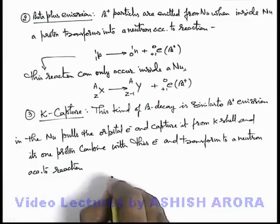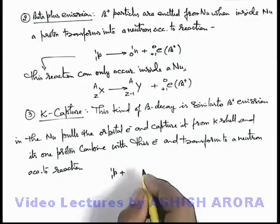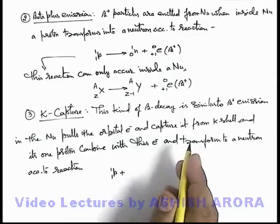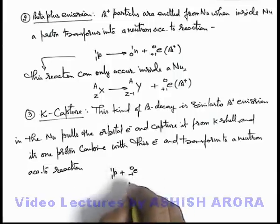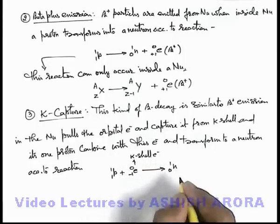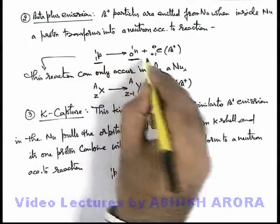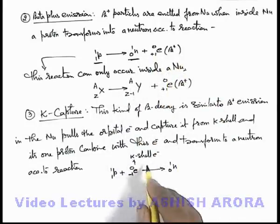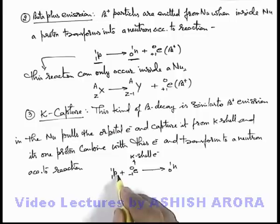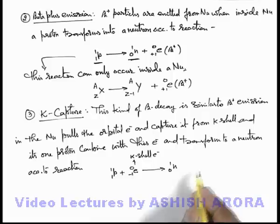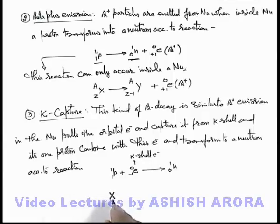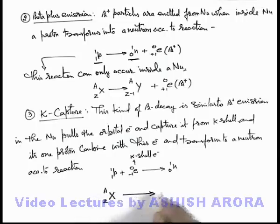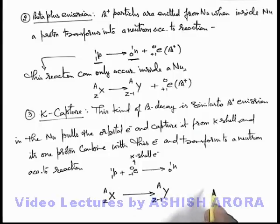This reaction better explains the phenomena: inside the nucleus, if we have a proton, it captures one electron from the K shell, which is very close to the nucleus — this occurs in the case of heavy elements. The proton combines with the K shell electron and transforms into a neutron (zero, 1). In beta plus emission, a proton was also getting transformed into a neutron but emitting a positron, whereas here an electron is captured from the K shell and the proton transforms to a neutron but no physical particle is emitted from the nucleus.